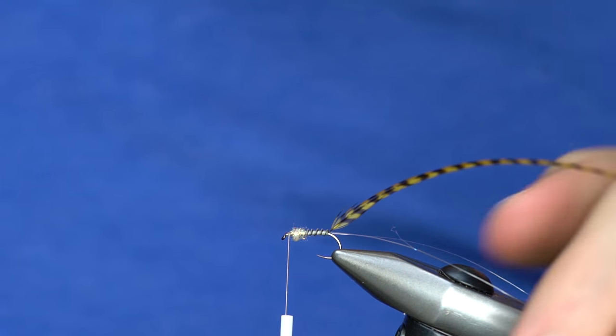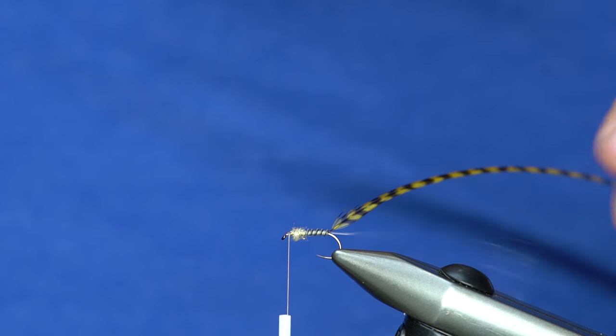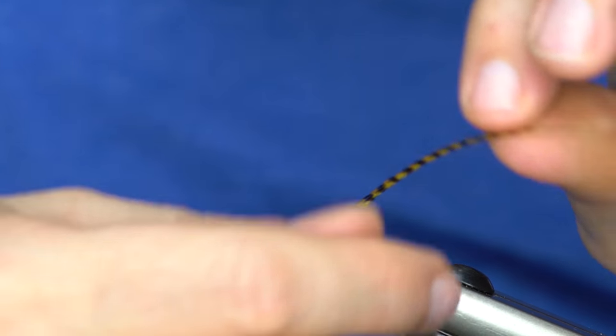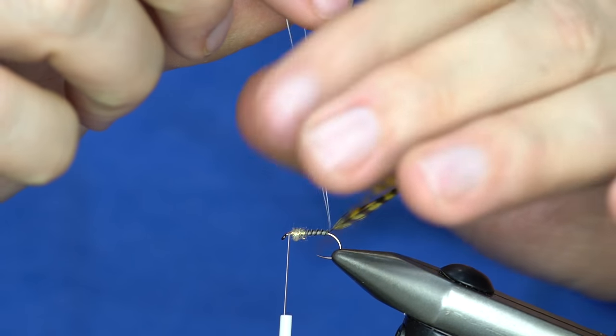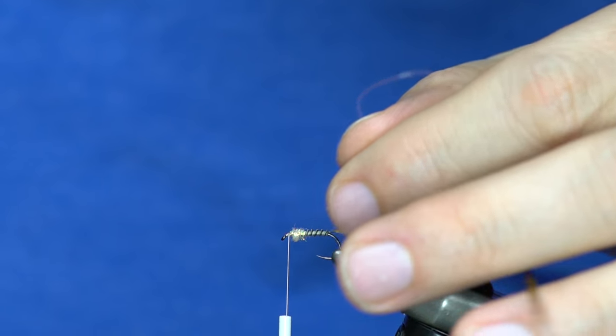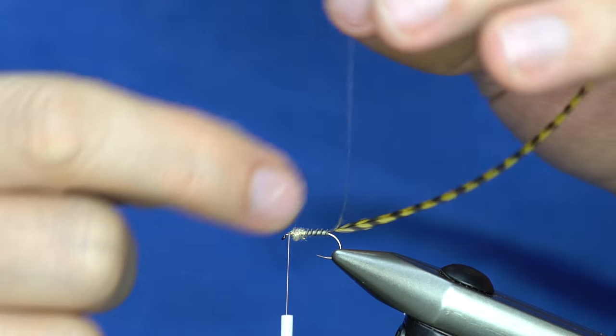I've just got a fly body tied in and some hackle, and then the key to this pattern, which is the mono. Notice I've got just a loop of it, so you've tied in two pieces there going up the length.